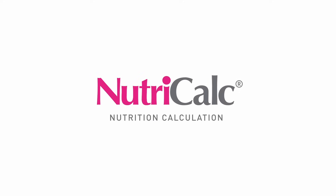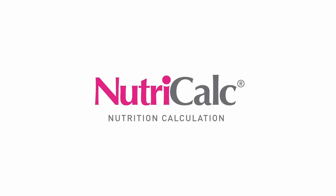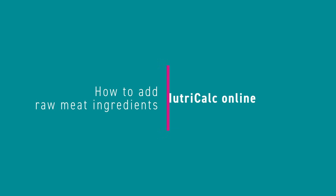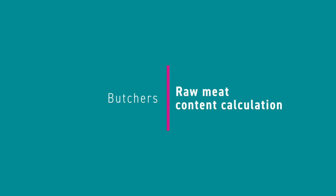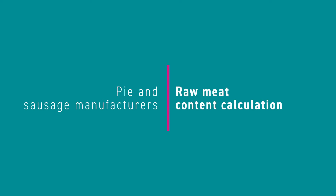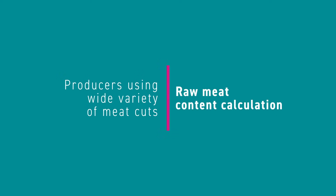Adding official raw meat cut ingredients is available to subscribers of both Professional Plus and Premium Plans. These offer the opportunity to generate official meat quids which include excess fat and connective tissue. This is useful for butchers, pie and sausage manufacturers, and anyone who uses a wide variety of different cuts of meat in their manufacturing.